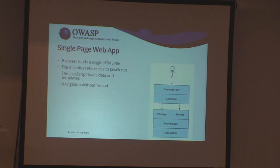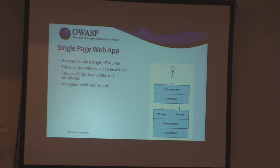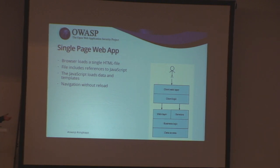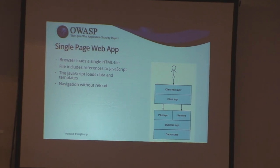A single-page web app — what is it? Basically, the browser loads a single HTML file, and that file contains no user data. It's just an HTML that loads some scripts and some CSS. That JavaScript then starts loading the user data. So there's a clear separation: on the left we have a web layer that only serves things like CSS, JavaScript, images and other assets. And we have some services that normally produce JSON, which provide the actual user data.